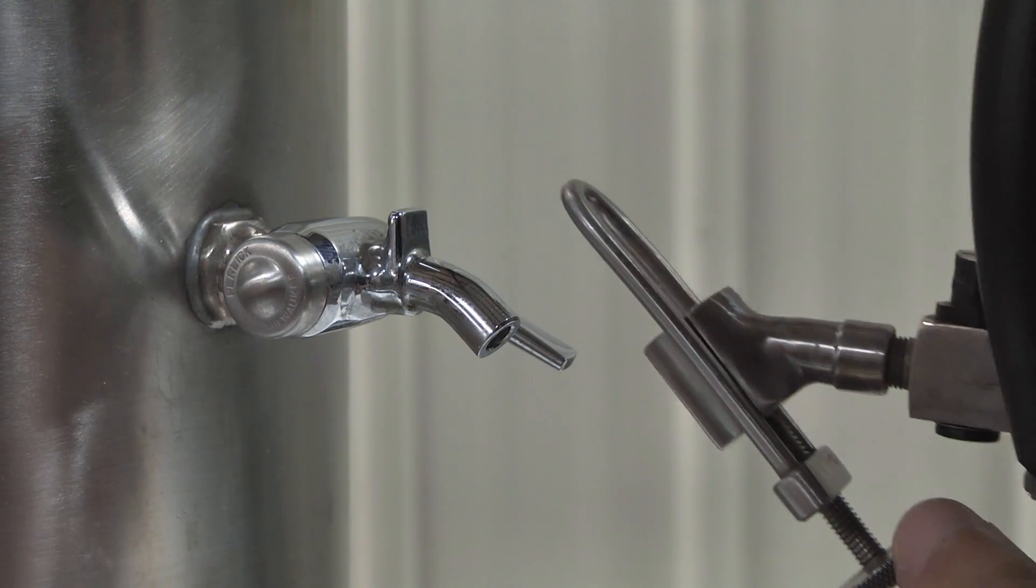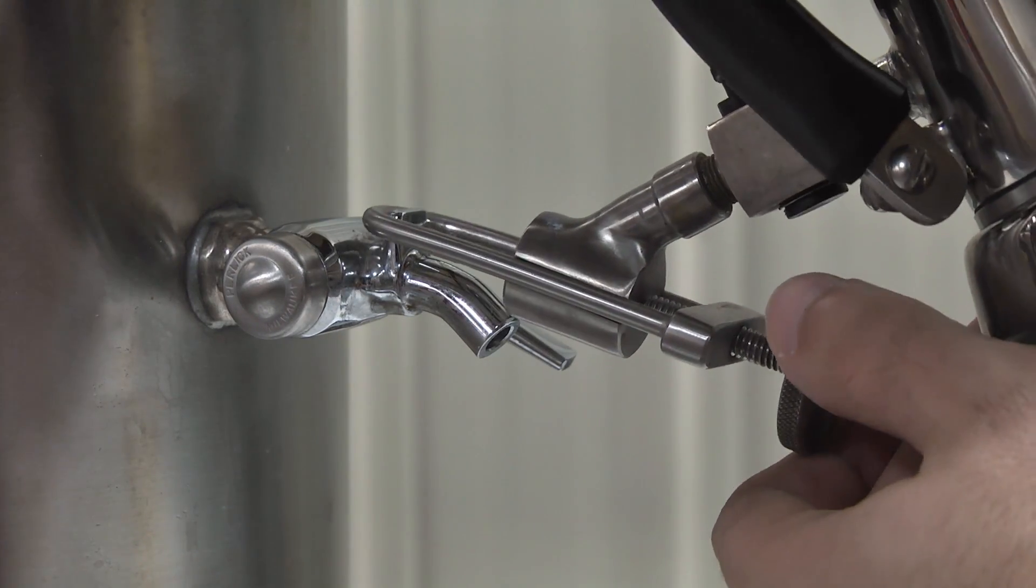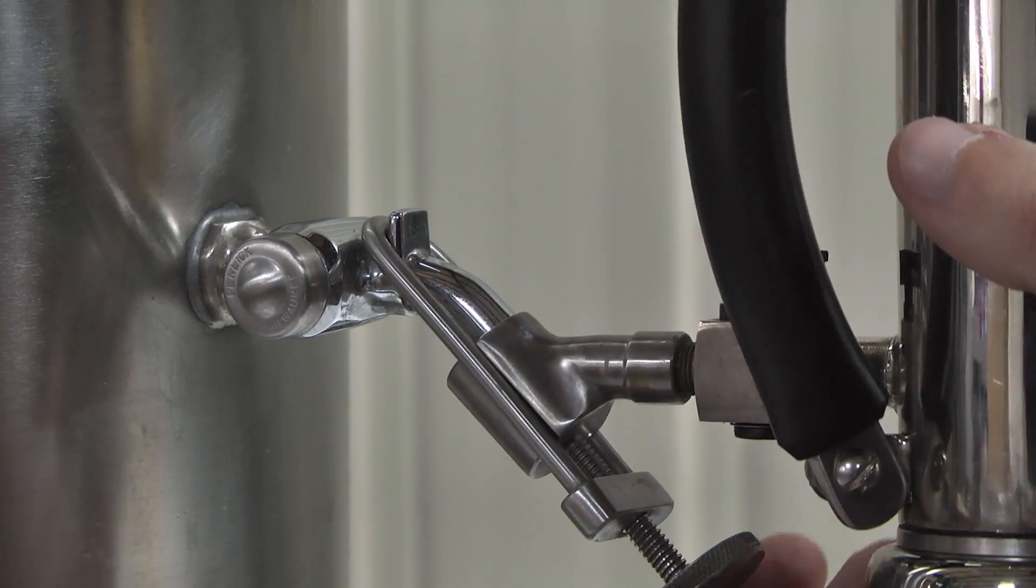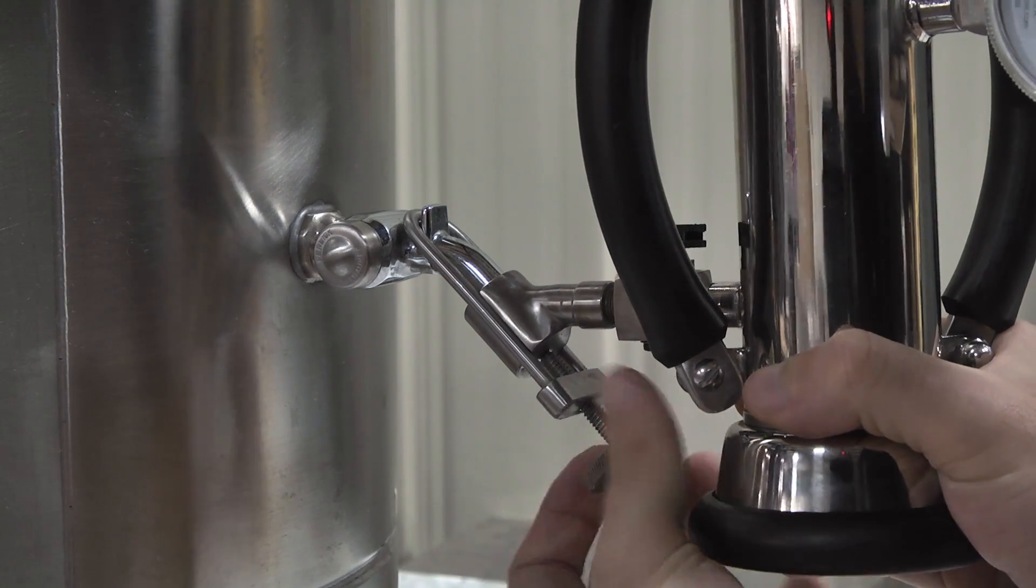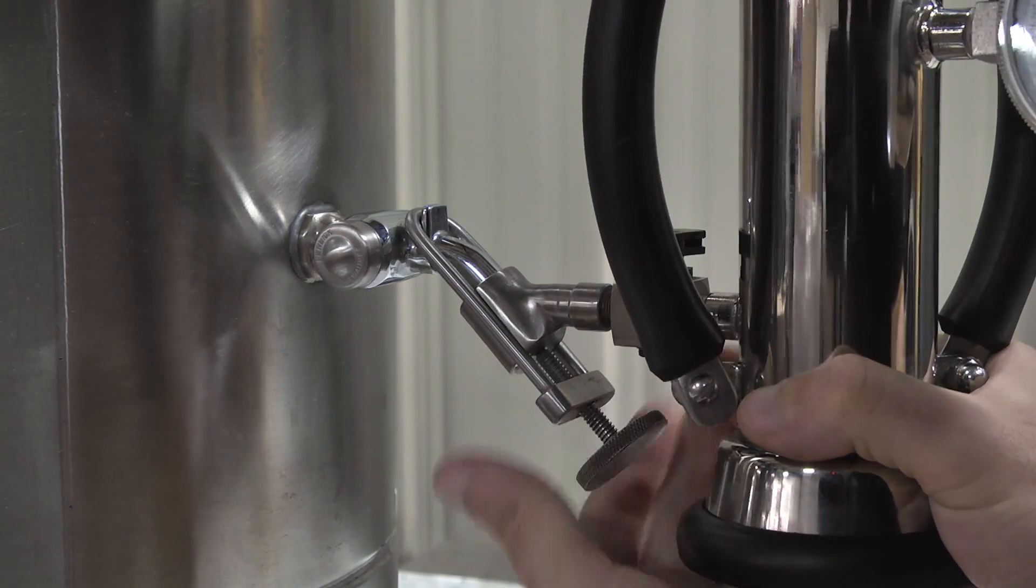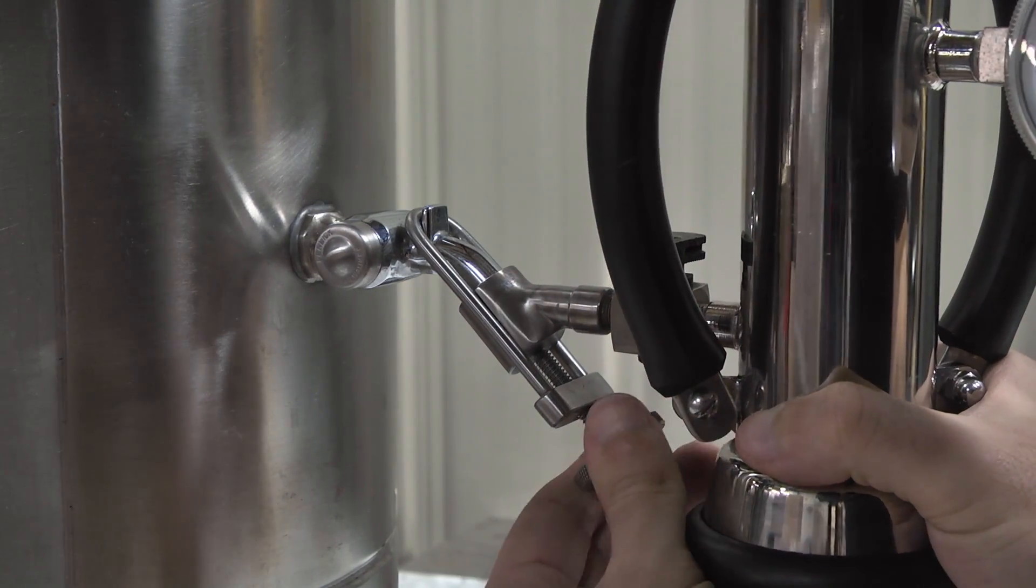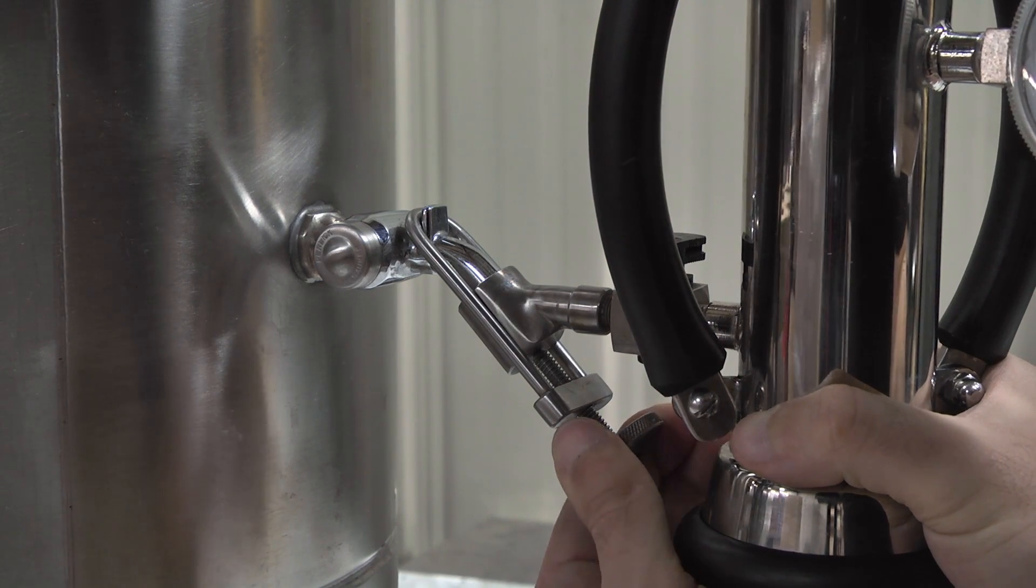Attach the volume meter to the tricock of the tank by opening the clamping device screw and sliding the clamping device yoke over the boss of the tricock. Turn the clamping device screw clockwise so that the clamping device gasket makes a tight seal between the tricock and clamping device assembly.